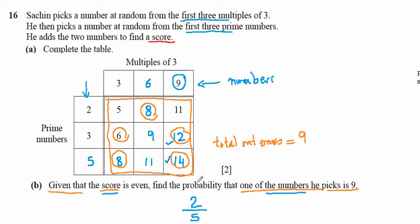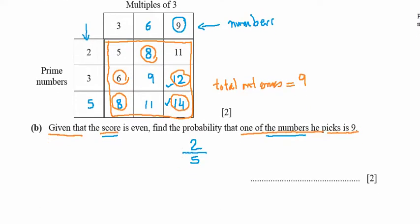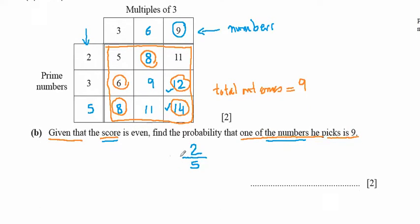In symbolic form, this is written as P(nine | E) where E means the score is even. We have found the answer is two over five using the direct method. Now we will also verify this using the conditional probability formula.